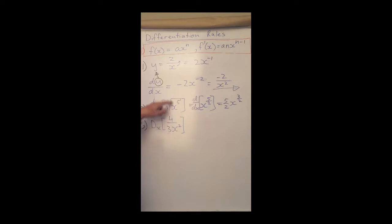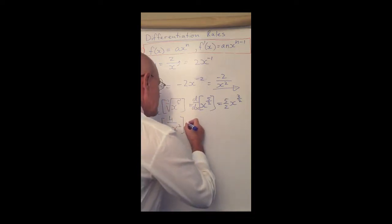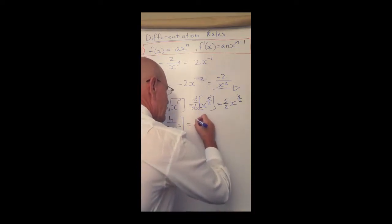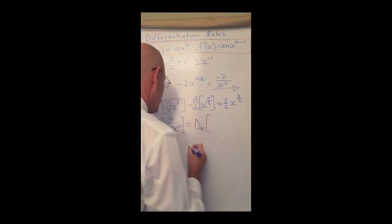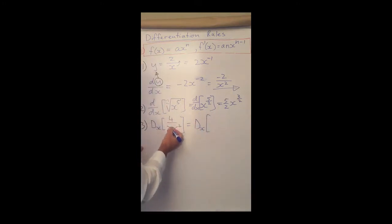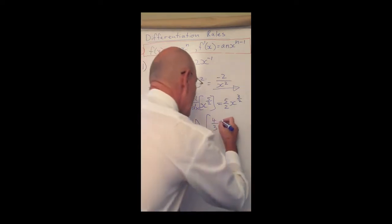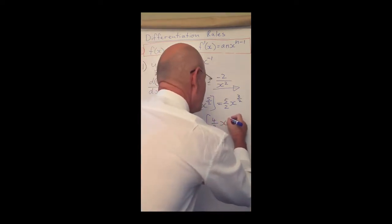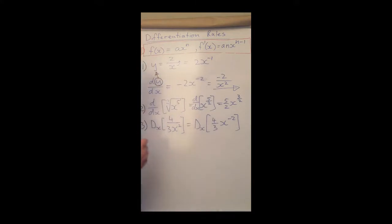Similar to what we did with this one over here, we have something below the line, so we just take it to the top. So this is equal to differentiate towards x - yes, that's what we want to do - and we can rewrite this coefficient as 4 over 3, and this x squared I can just take to the top, to the numerator, and just change the sign of my exponent, meaning x to the power of minus 2. Here we go, now we can work with that.